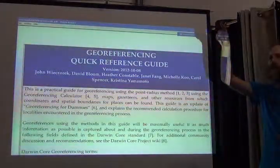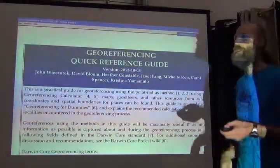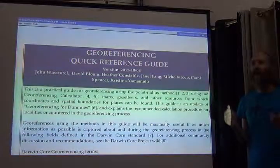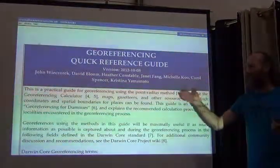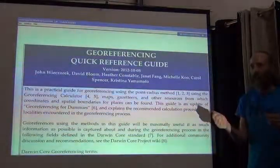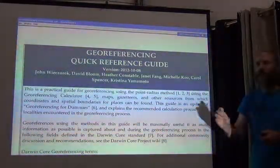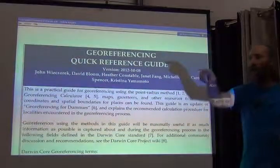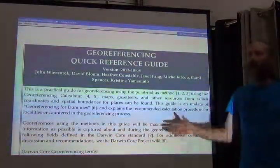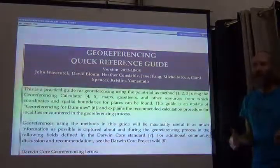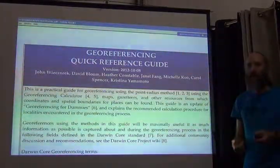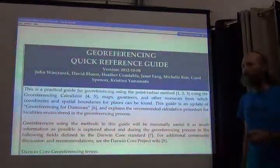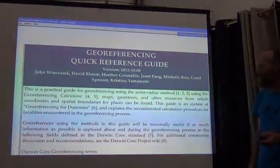Everyone got one? Good. The printed copy is useful because when you're geo-referencing, having it in your hand is much more practical than the digital copy — you can flip through it quickly, find what you're looking for, and draw notes as you learn. The quick reference guide encapsulates all the recommendations about how to geo-reference localities, reducing the 100-page book down to a single PDF document.